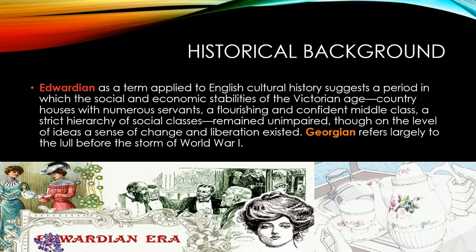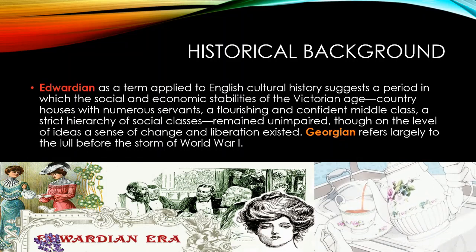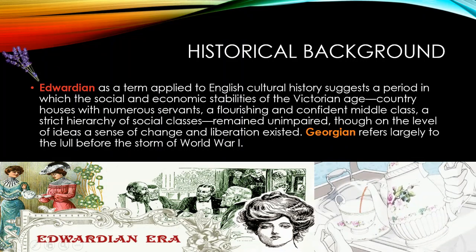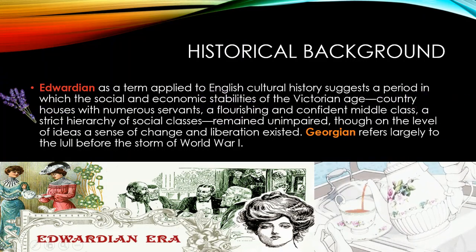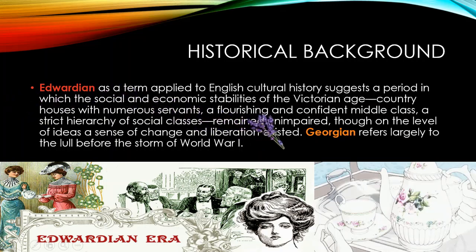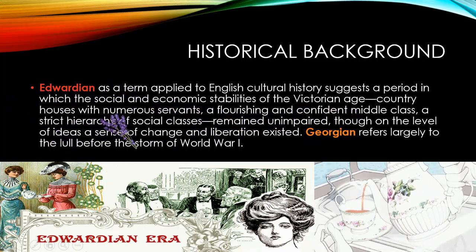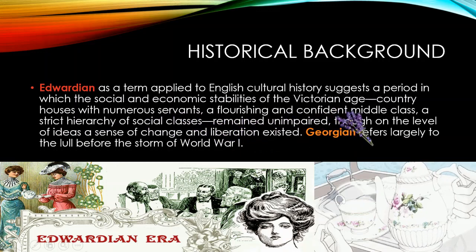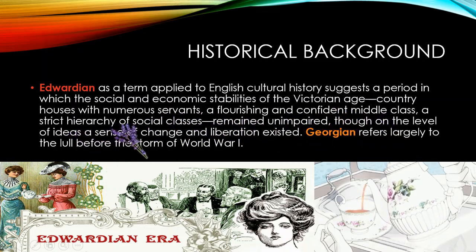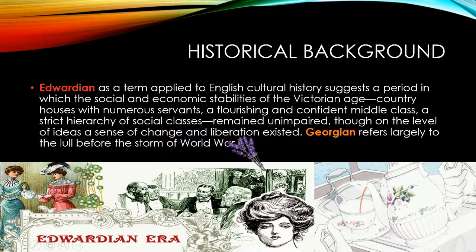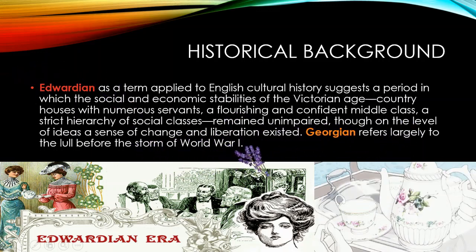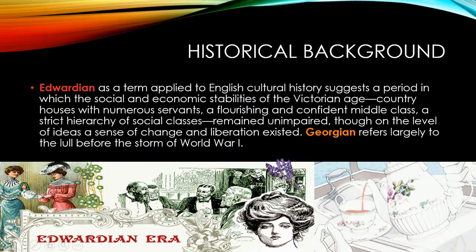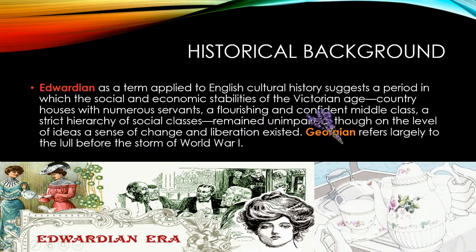Amidst this chaos, some people — especially the upper classes — continued their luxurious way of living. The Edwardian term, applied to English cultural history, suggests the period in which the socio-economic stabilities of the Victorian age — country houses with numerous servants, a flourishing and confident middle class, a strict hierarchy of social classes — remained unimpaired, though on the level of ideas a sense of change and liberation existed. The Georgian period refers largely to the lull before the storm of the First World War.